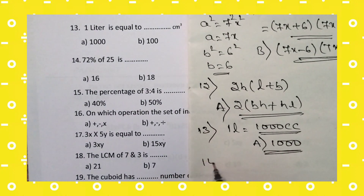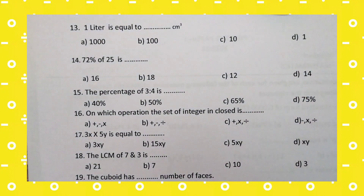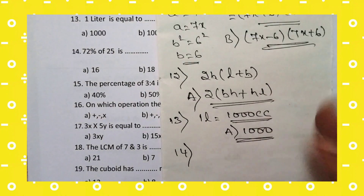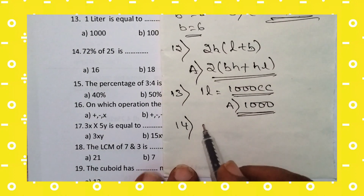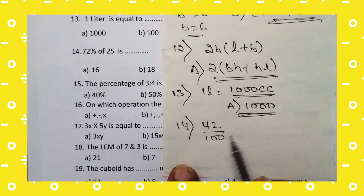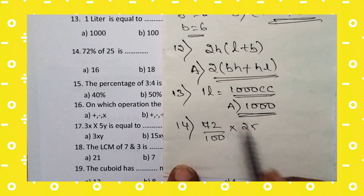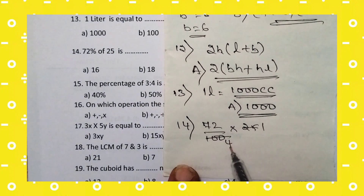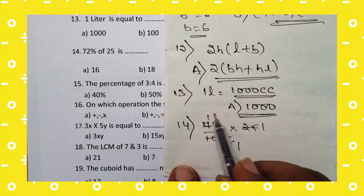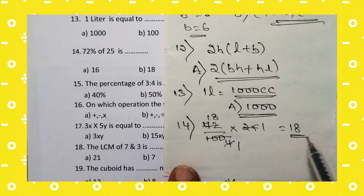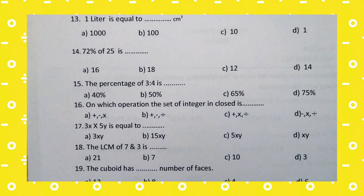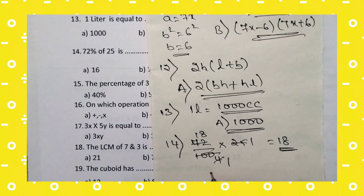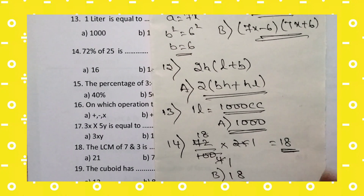14th question: 72% of 25. Calculate 72 divided by 100 into 25. Simplifying: 25 divided by 100 gives 1/4, then 72 divided by 4 equals 18. Therefore 72% of 25 equals 18. For the 14th question, option B — 18 — is the right answer.